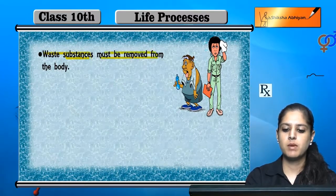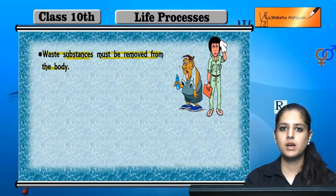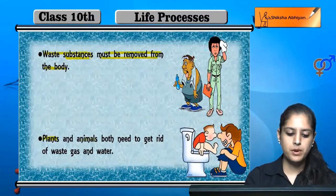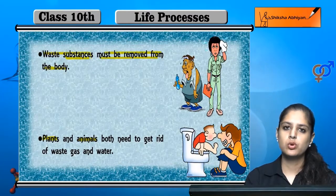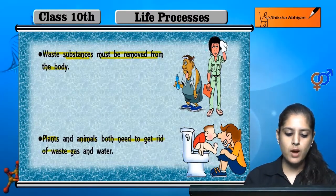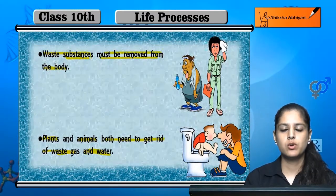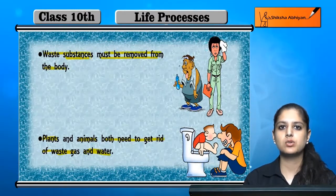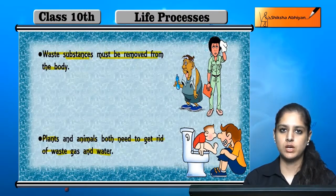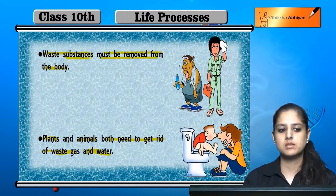Waste substances must be removed from the body. Both plants and animals remove waste materials — including waste water and other waste materials — from their bodies, though they excrete in different ways.